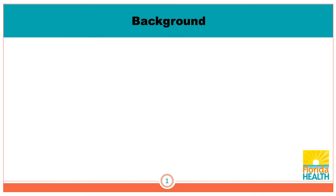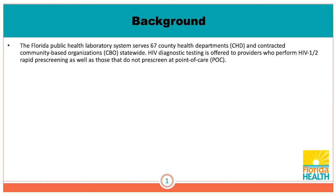A little bit about the background. Our public health laboratory system serves 67 county health departments and many contracted community-based organizations within those county health departments. Our HIV diagnostic testing is offered to providers who perform HIV 1-2 rapid pre-screening as well as those who do not pre-screen at point of care. Most of the acute cases we're going to be talking about are still coming from those that may not be pre-screening to a great extent.